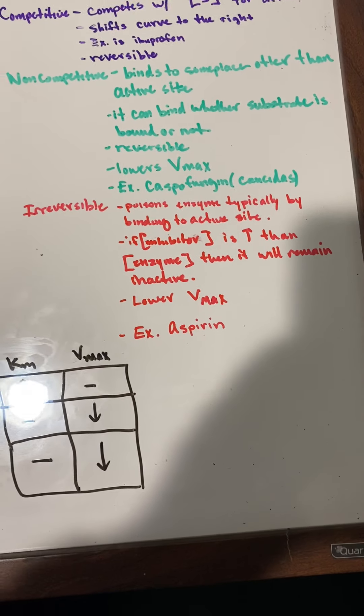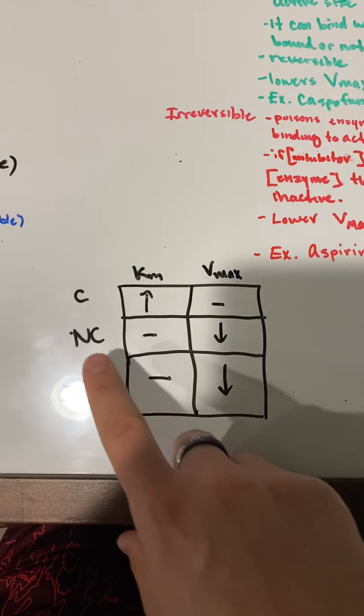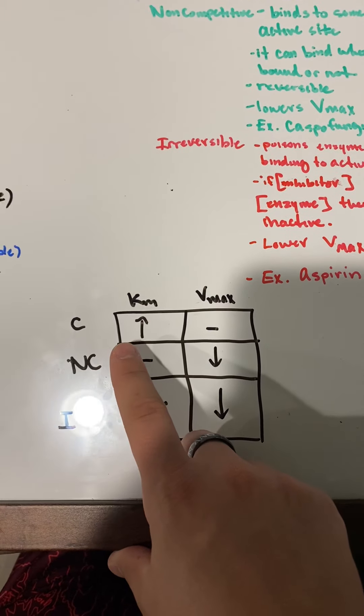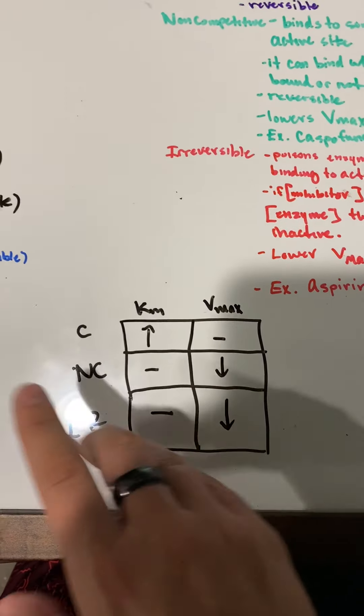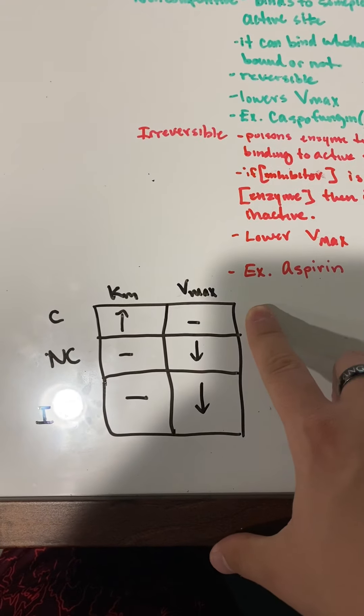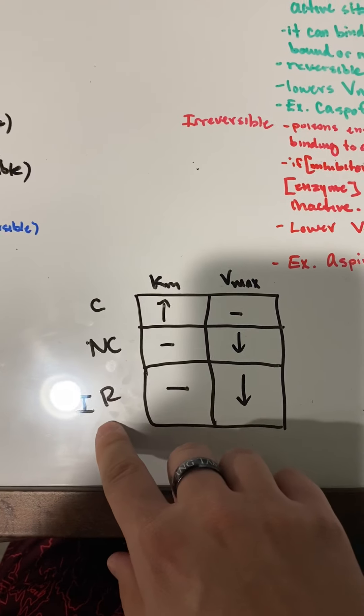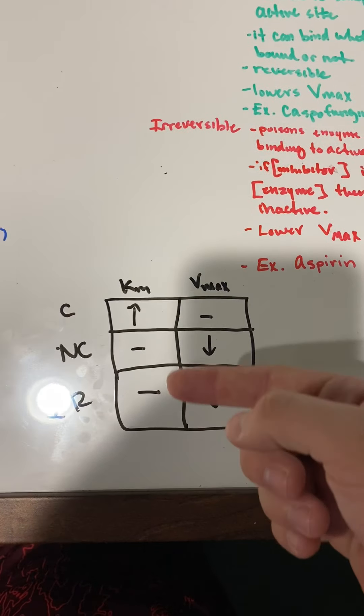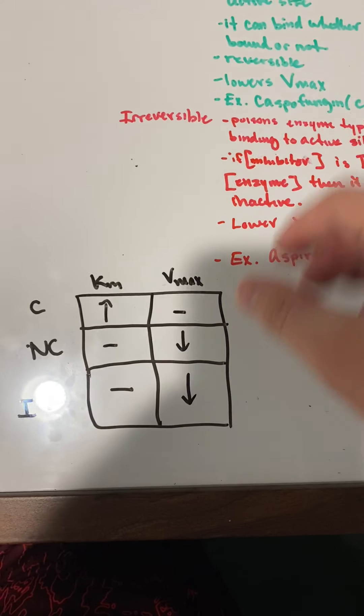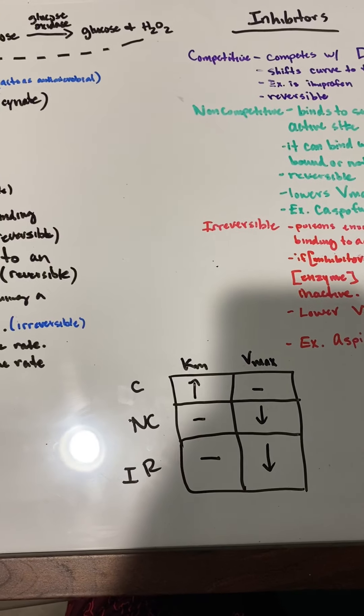Here's a little table we were given. For competitive inhibitors, it increases KM so it shifts that value to the right, but it doesn't change the Vmax—it still can make it to that 100%. Non-competitive and irreversible inhibitors don't change the KM, but they lower Vmax so it drops that amount down. And that's the first module.